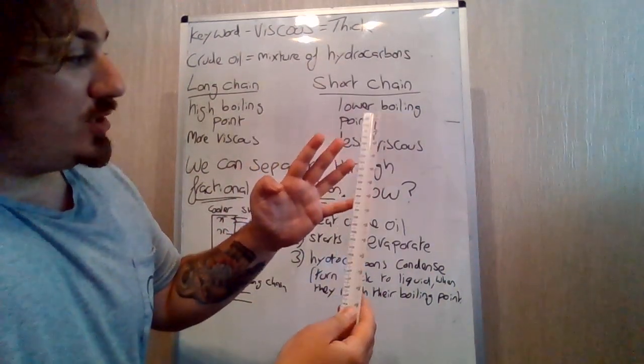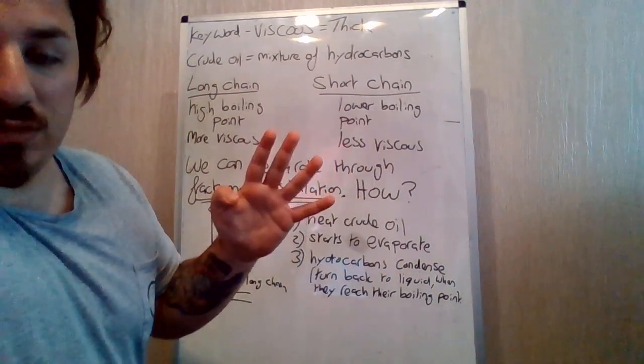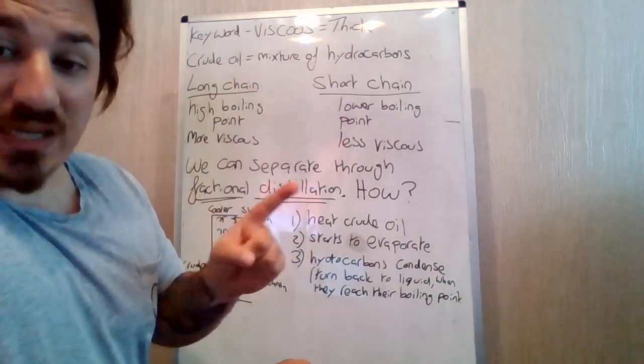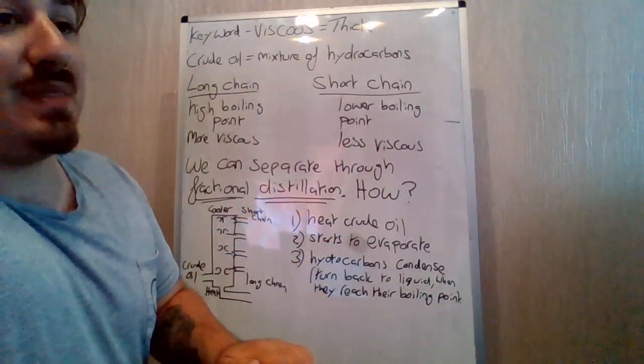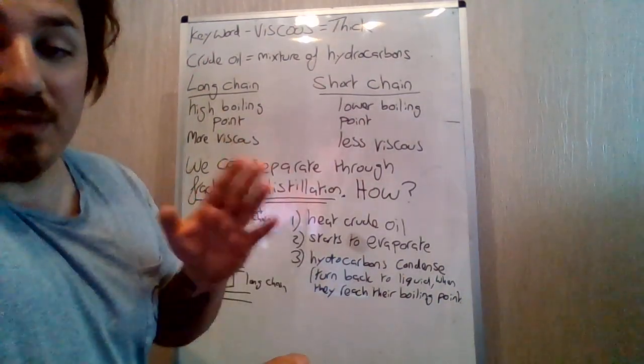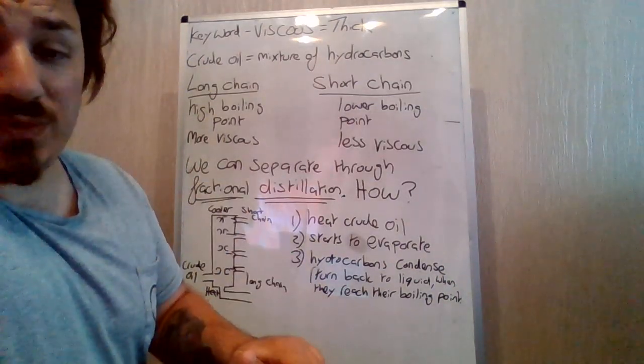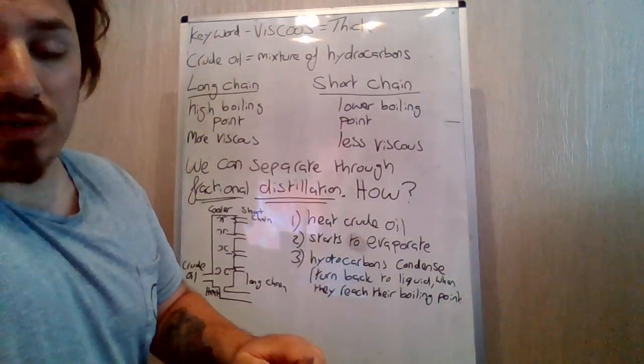Remember that alkane has a single bond and alkene has a double bond. Remember carbons have to make four bonds all the time. Alkanes are saturated, which means they can't make any more bonds. And alkenes are unsaturated as well.